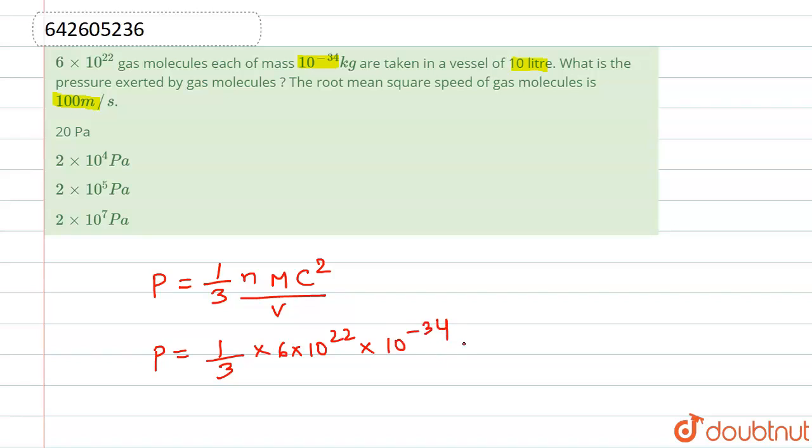and our value of c is 100, so we are squaring the value, and we have the value of volume that is 10 liters, so we are going to multiply this by 10^-3 for converting pressure into pascal.